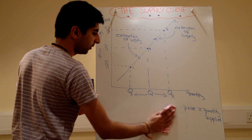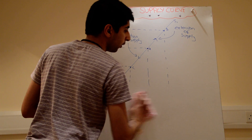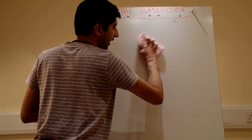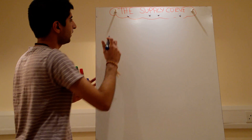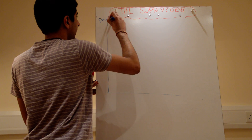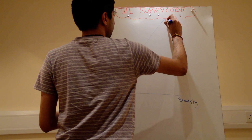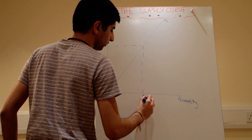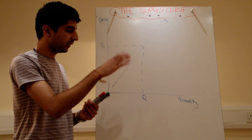Now let's drop the assumption of ceteris paribus. The law of supply is understood — when the price changes on its own, those are the effects. But now let's let other factors affect the supply curve. What other factors will affect supply other than the price?